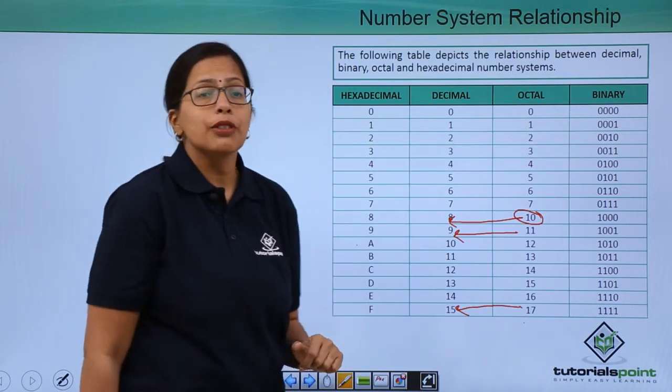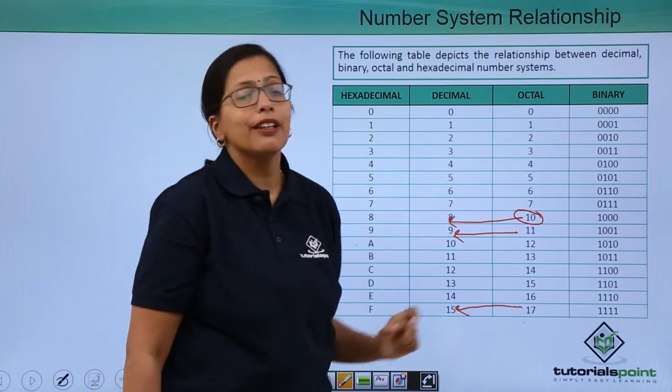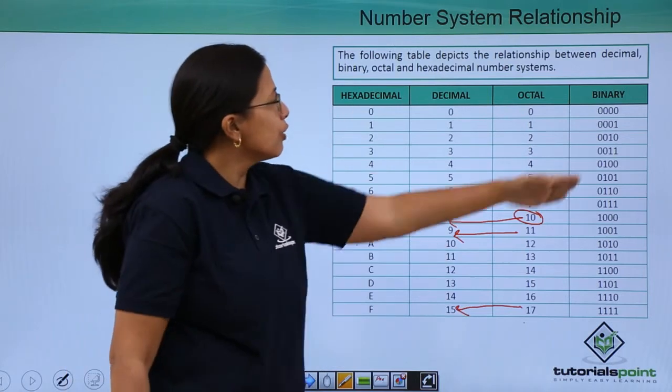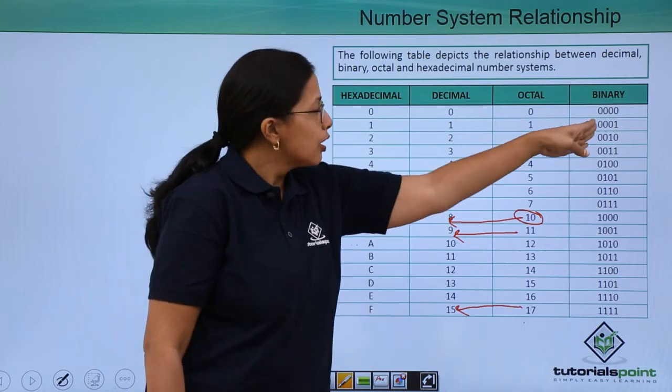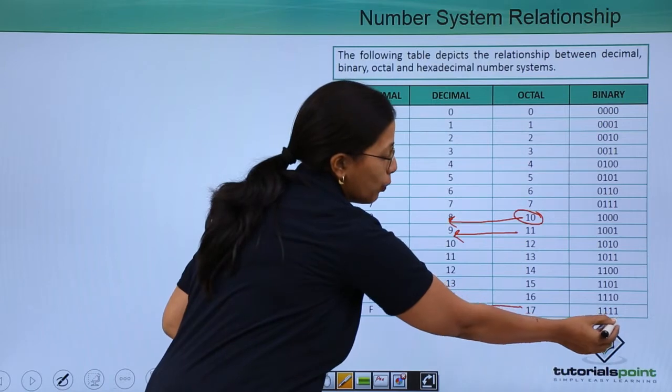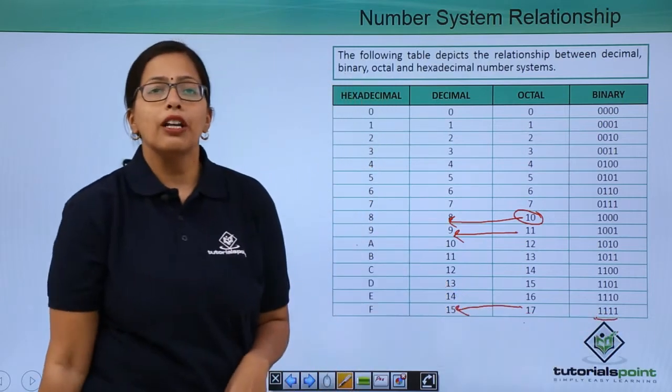So when I go to binary number system, binary number system can again have 0 and 1 itself. So 0 is represented as 0000, 00001, 0010 till we come to 1111.